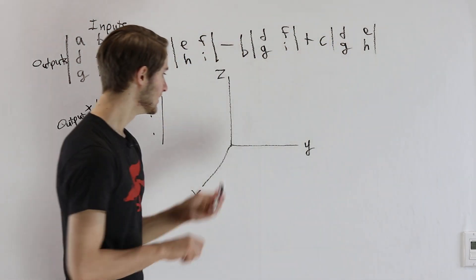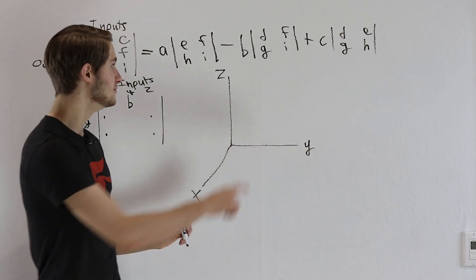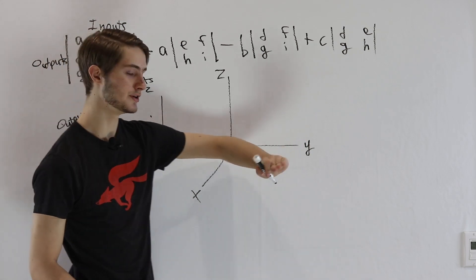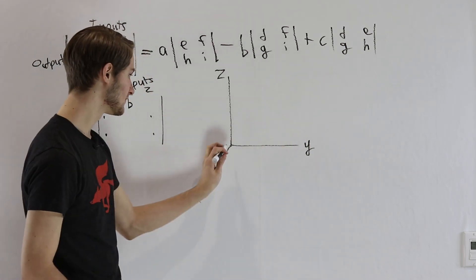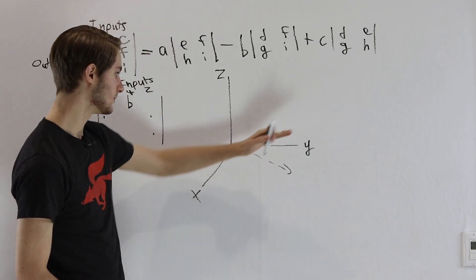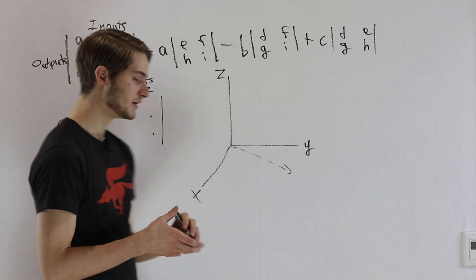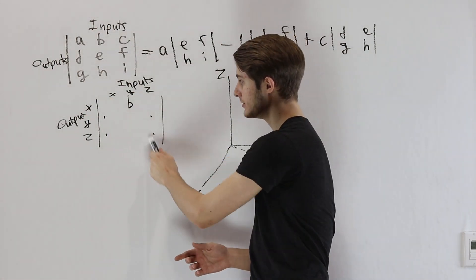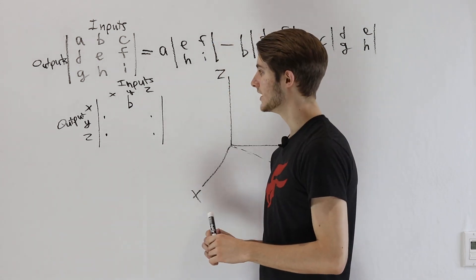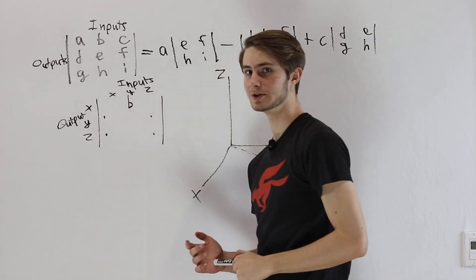B is how much a y input gets mapped to an x output. In other words, if we think about the initial vector going along the y axis, if B is a positive number, that y axis is going to start getting turned towards our x. So it's going to look something like this. Notice our y axis is rotating this way towards the x. And what is this determinant that we have here? It's another area scaling situation.